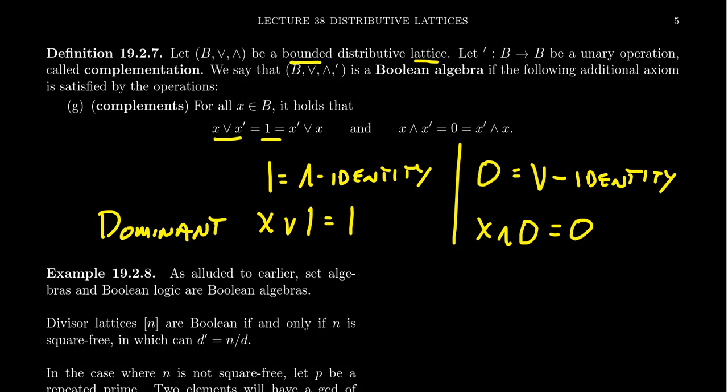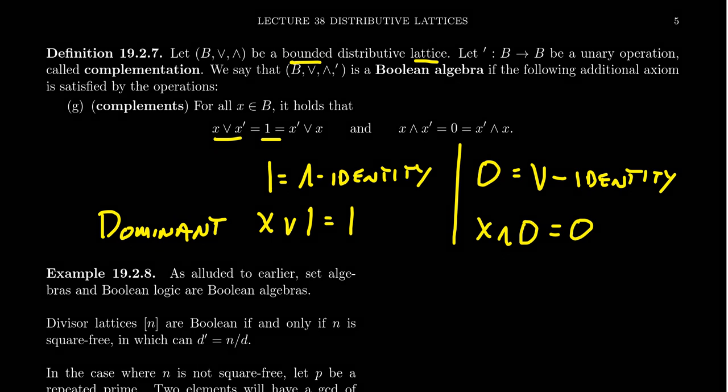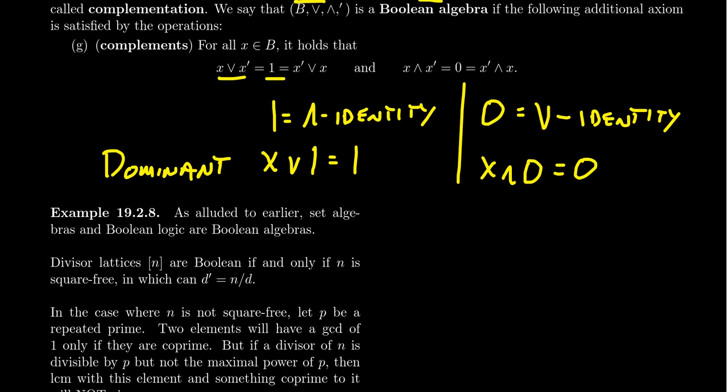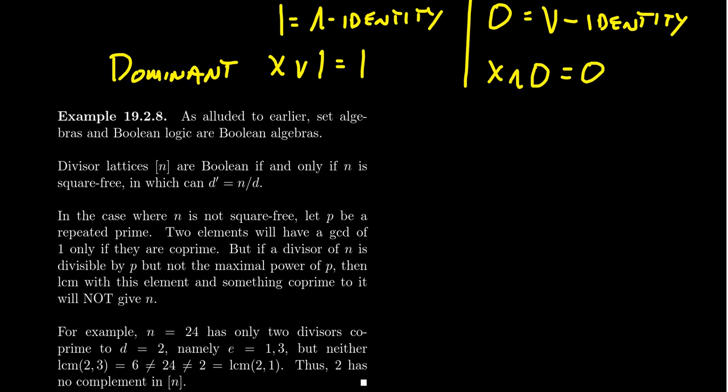Make sure you don't confuse this: X join X' gives you 1, not 0. And X meet X' gives you 0, not 1. So let's look at some examples to try to grasp this idea of a Boolean algebra. A Boolean algebra is a bounded distributive lattice with complements.